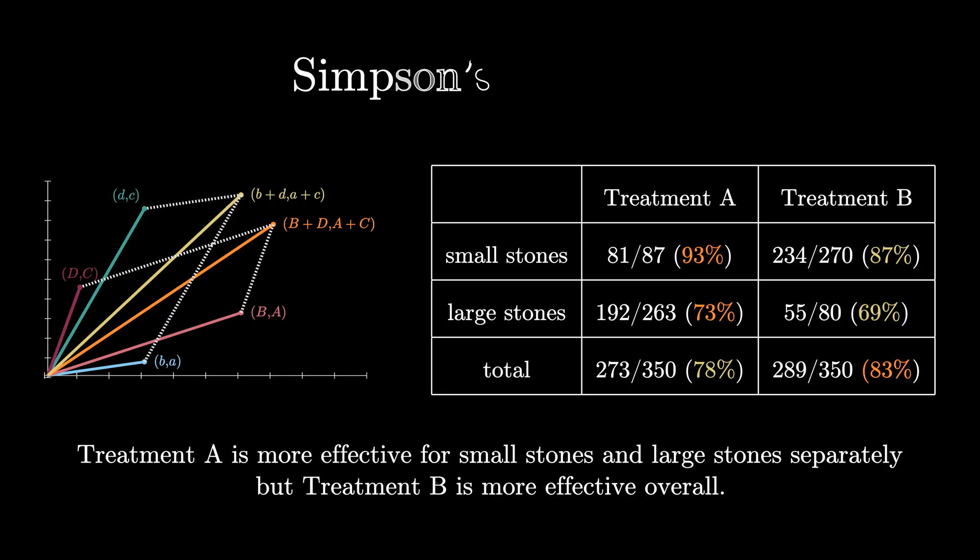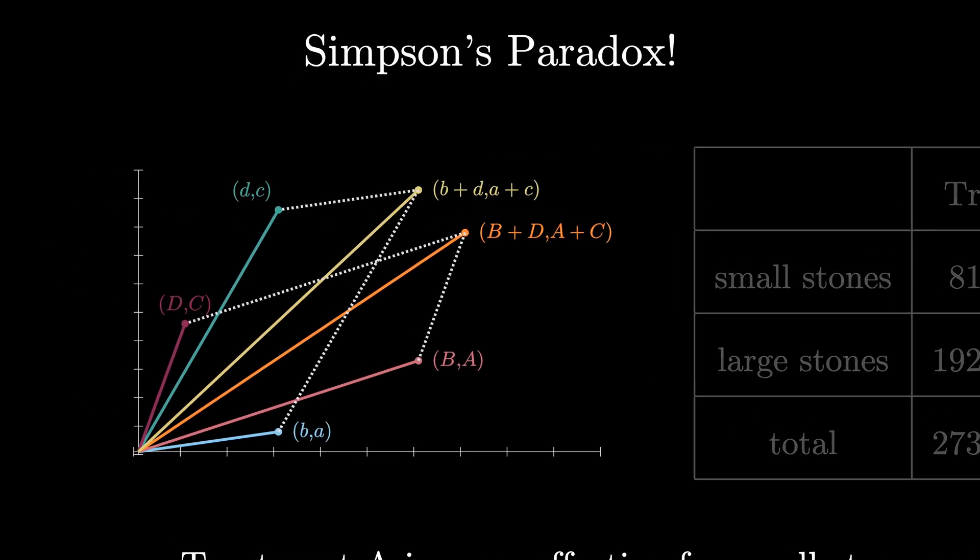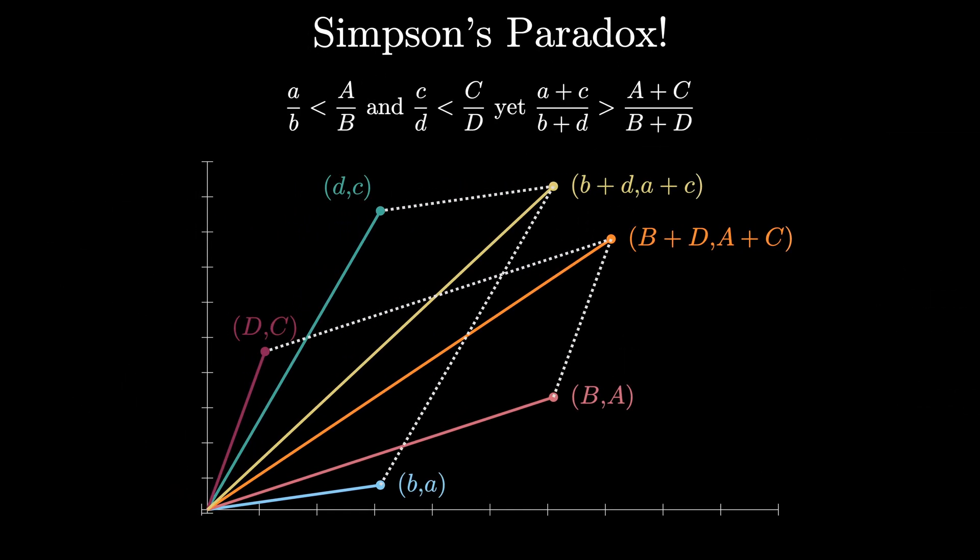Again, this phenomenon is known as Simpson's paradox. It actually isn't a paradox at all as the visual proof from Jerzy Kocik shows. It is just a consequence of vector arithmetic and how it affects pooled proportions when denominators are varying sizes.